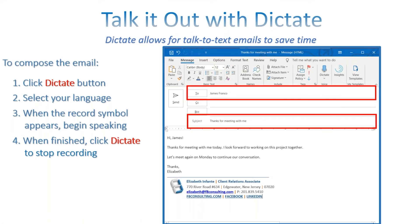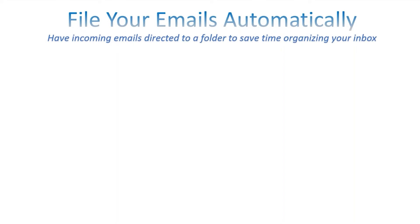When you're done, click Dictate again to stop recording. One thing to note: you do have to click through the different fields to dictate them, which somewhat negates the hands-free nature. For the recipient field especially, it's best to type that in manually in case the recording doesn't understand you or it's a long name. Same for the subject line — type those two fields and then dictate the message body.